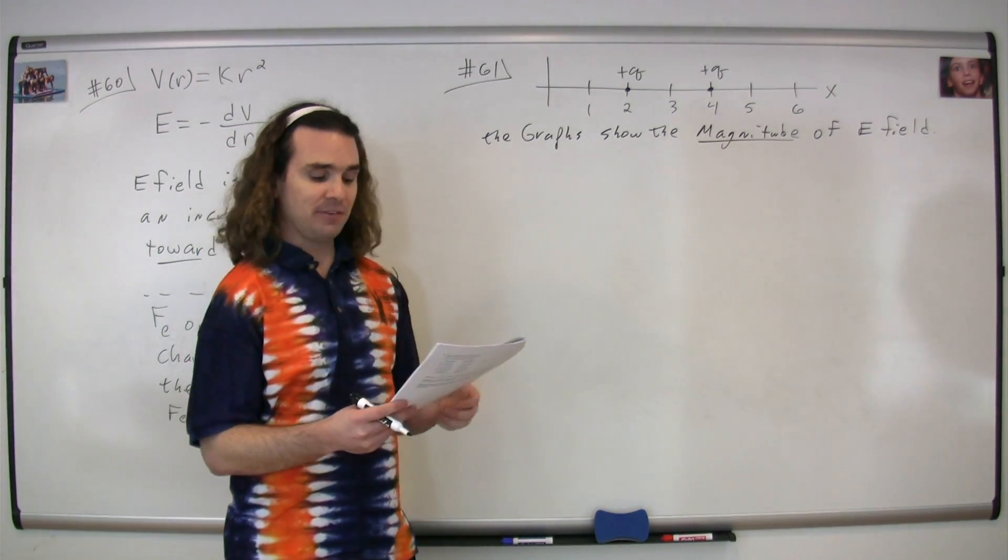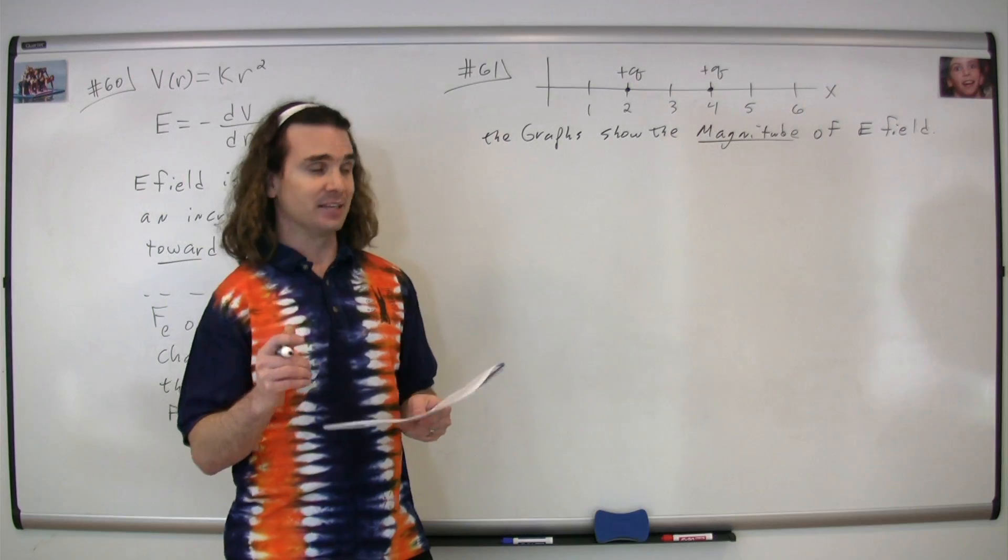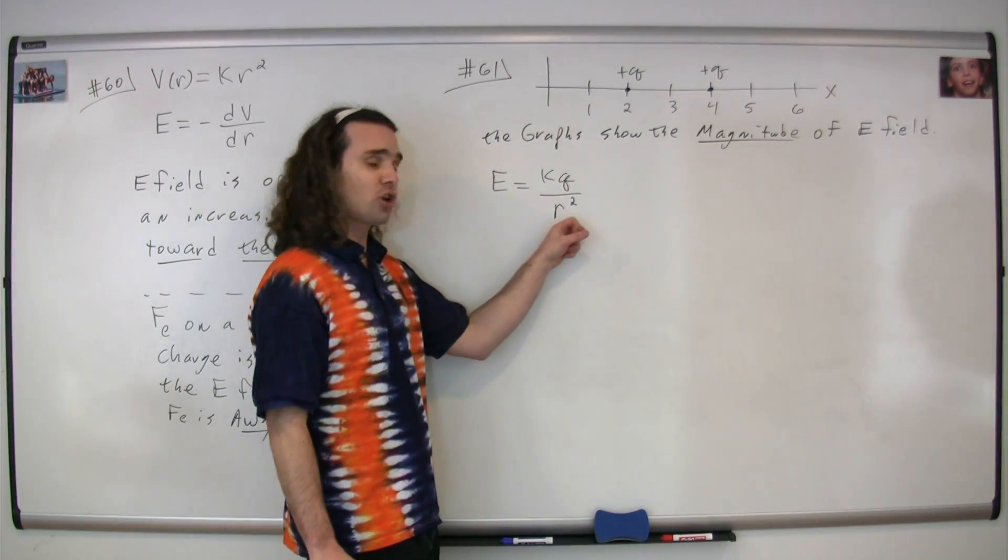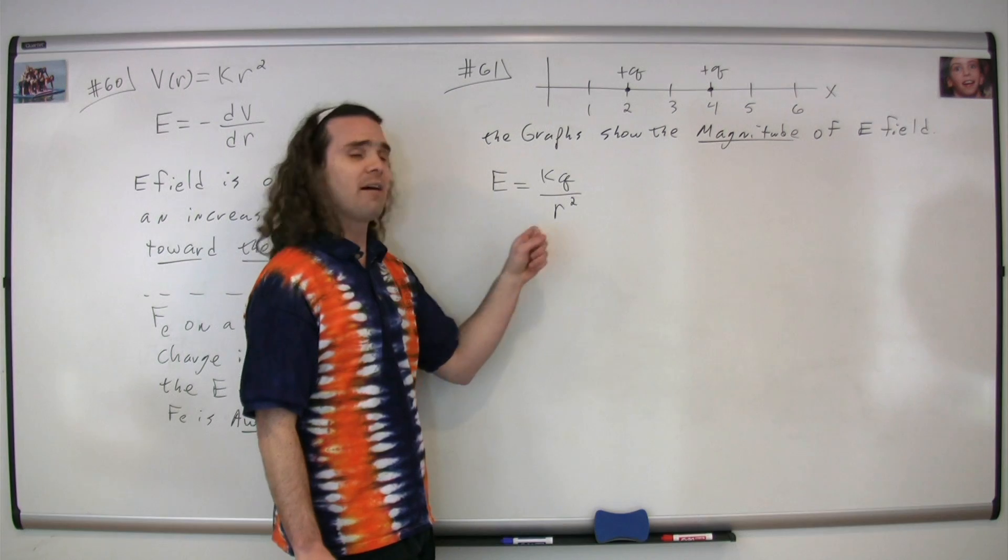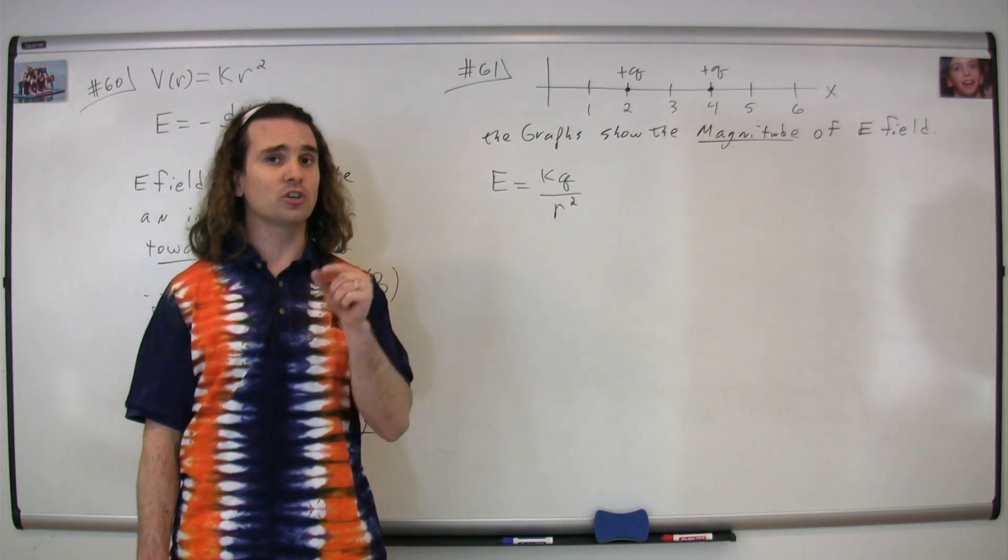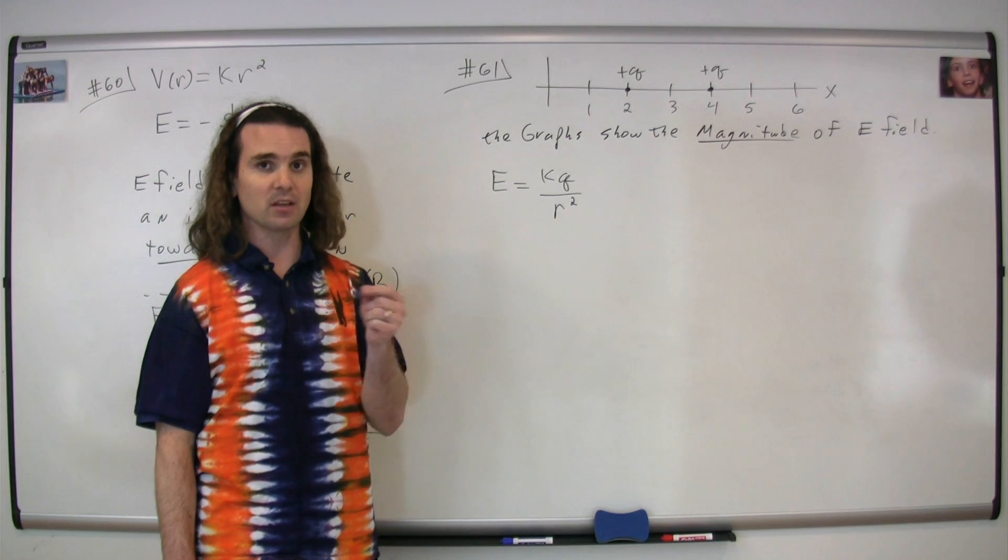The equation for the electric field caused by a point charge is: the electric field equals the Coulomb's constant times the charge causing the electric field divided by r squared, where r is the distance from the center of the charge to the point where the electric field is.